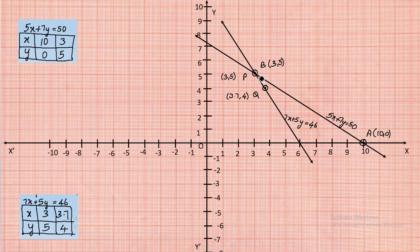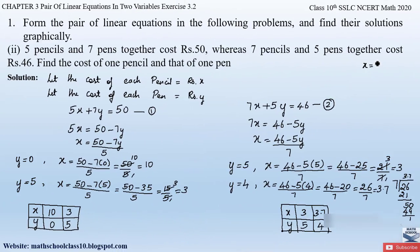Let us verify by substituting x = 3 and y = 5 into equation one: 5x + 7y = 5×3 + 7×5 = 15 + 35 = 50. Left-hand side equals right-hand side, so this satisfies the first equation.